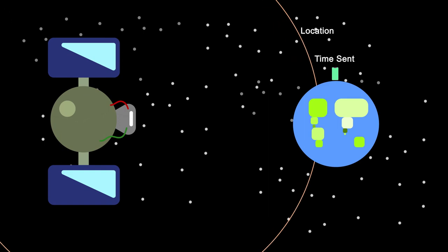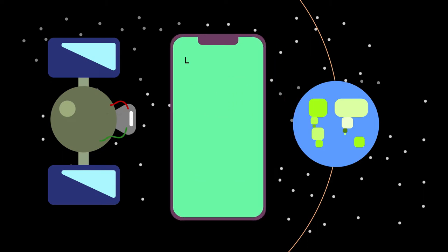When your smartphone receives the information, it checks the time the signal was received. So now, your phone has information about where the satellite was, the time the satellite sent the signal, and the time the phone received the signal.